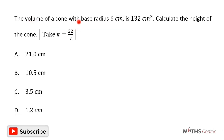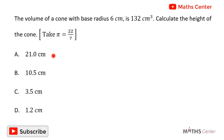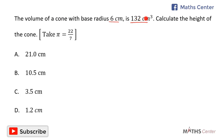The volume of a cone with base radius six centimeters is 132 centimeters cubed. Calculate the height of the cone. Take pi as 22 divided by seven. This is a multiple choice question and so we will solve the question and after that pick the correct option. The base radius of the cone is six centimeters and its volume is 132 centimeters cubed. We are going to use this information to calculate the height of the cone.